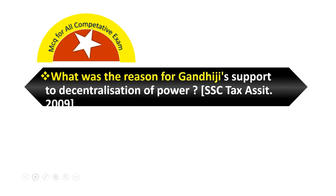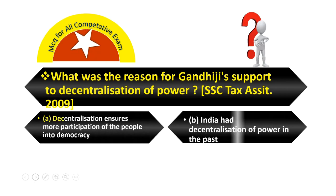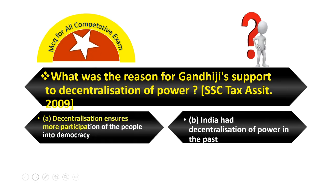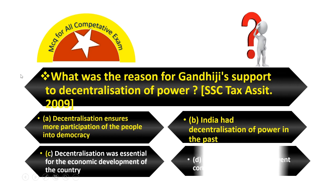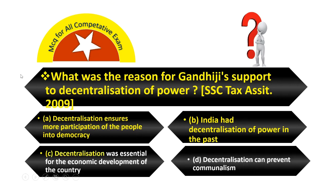What was the reason for Gandhi's support to decentralization of power? Option A, Decentralization ensures more participation of the people in democracy. Option B, India had decentralization of power in the past. Option C, Decentralization was essential for the economic development of the country. Option D, Decentralization can prevent communism.